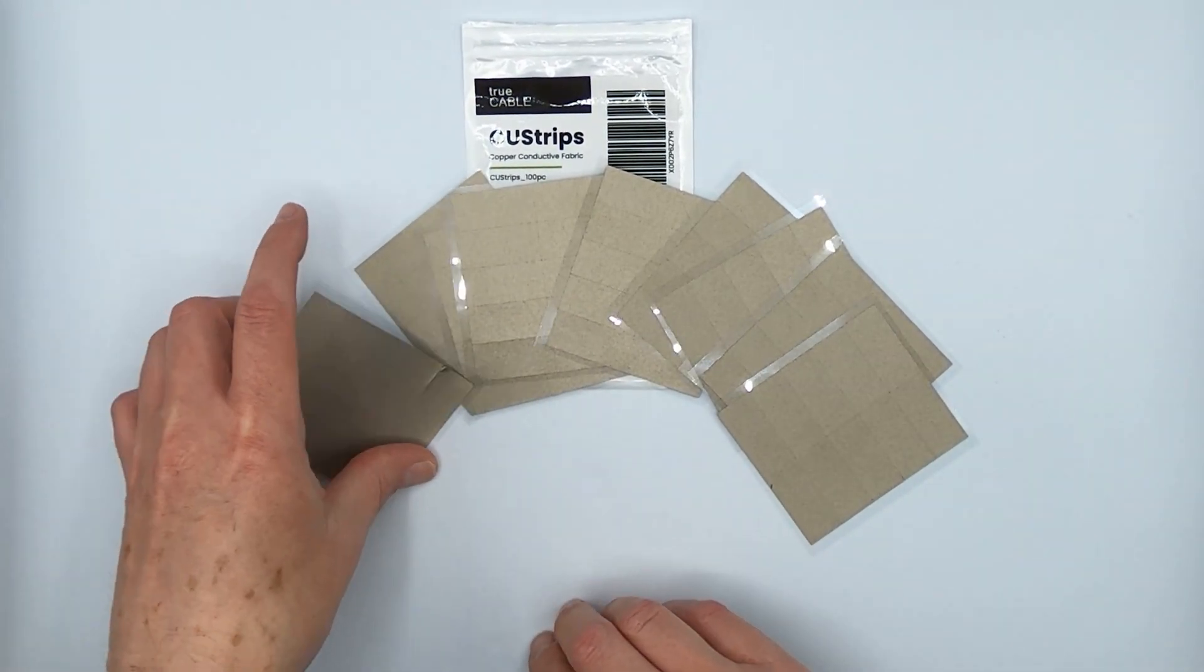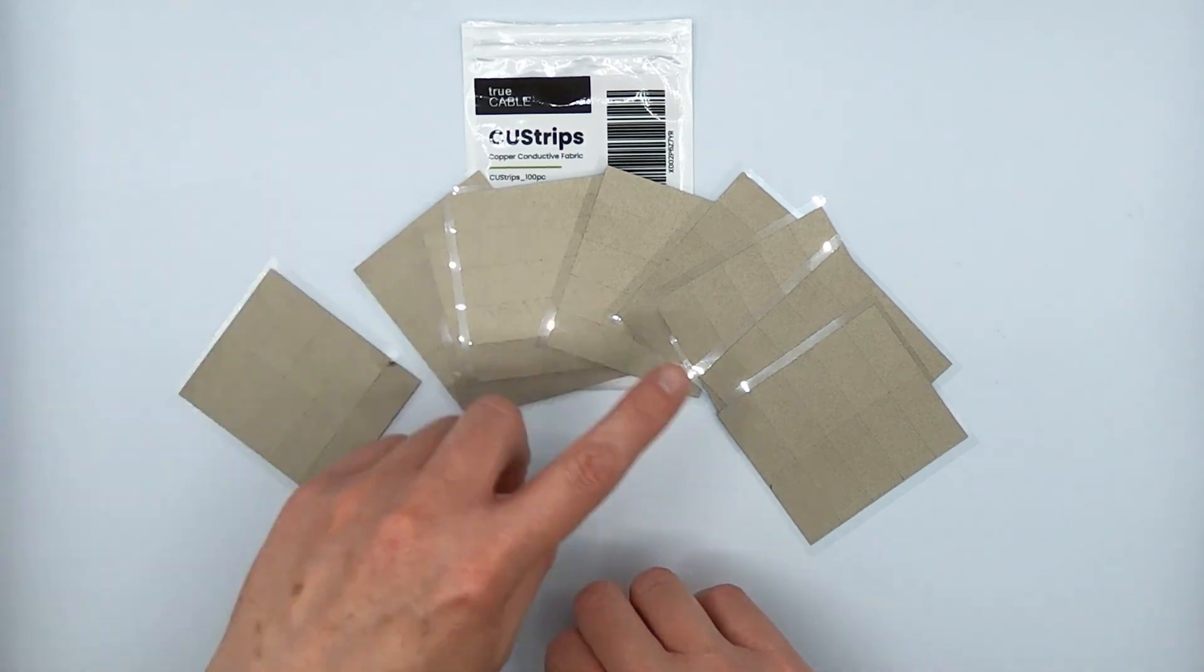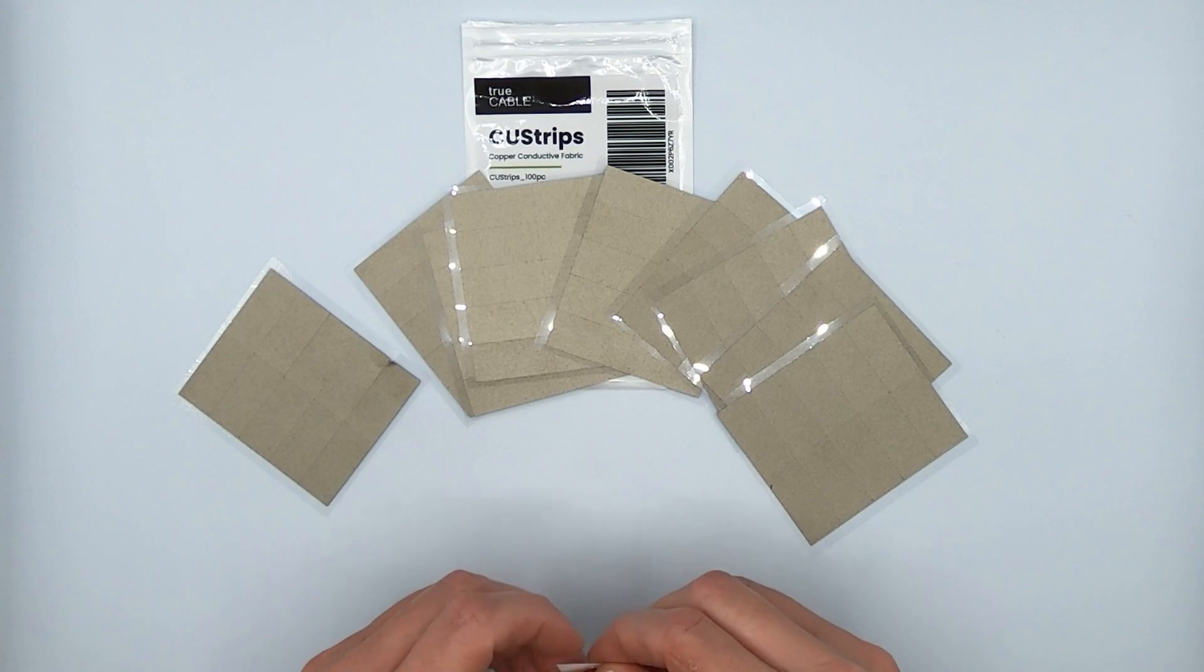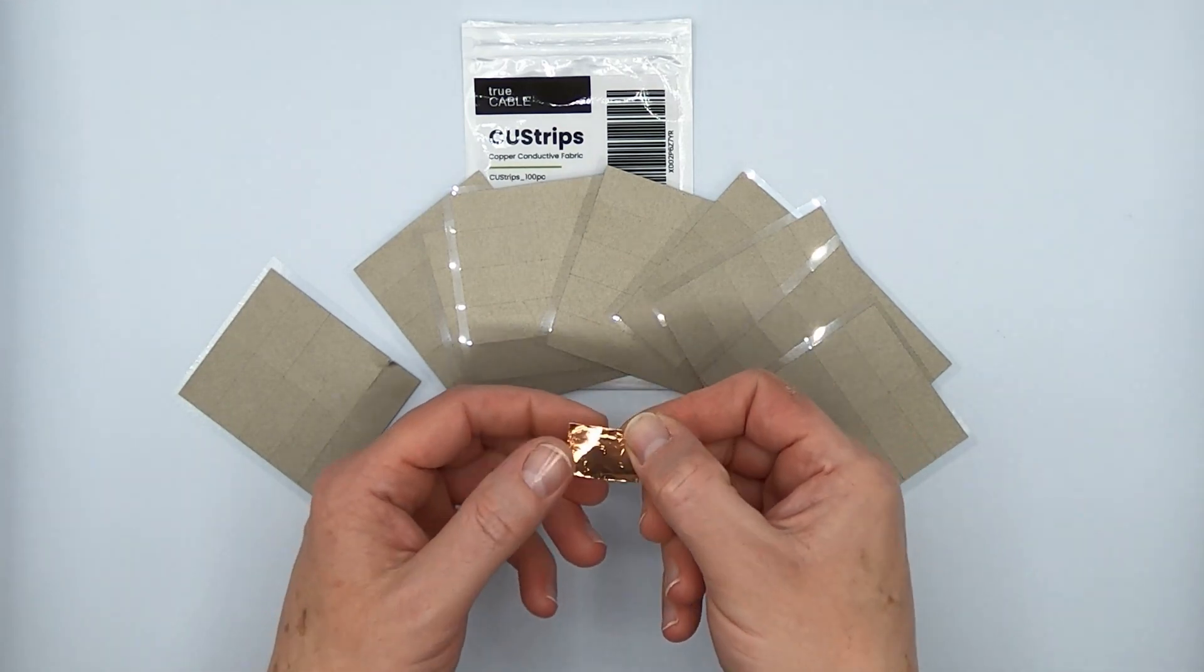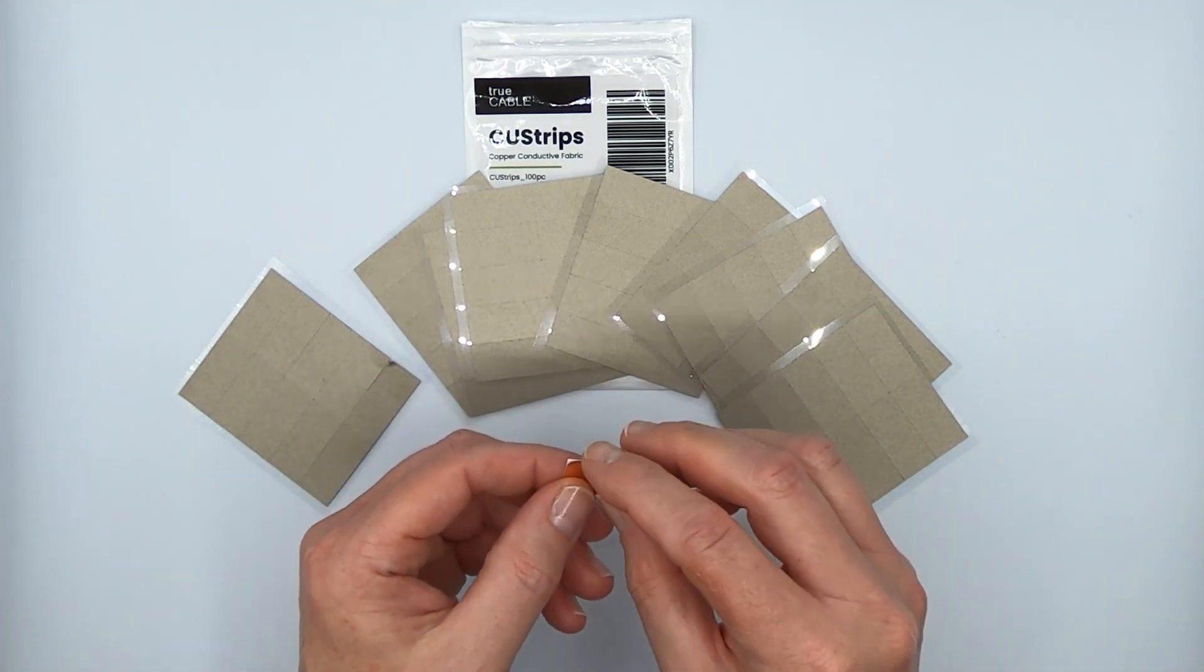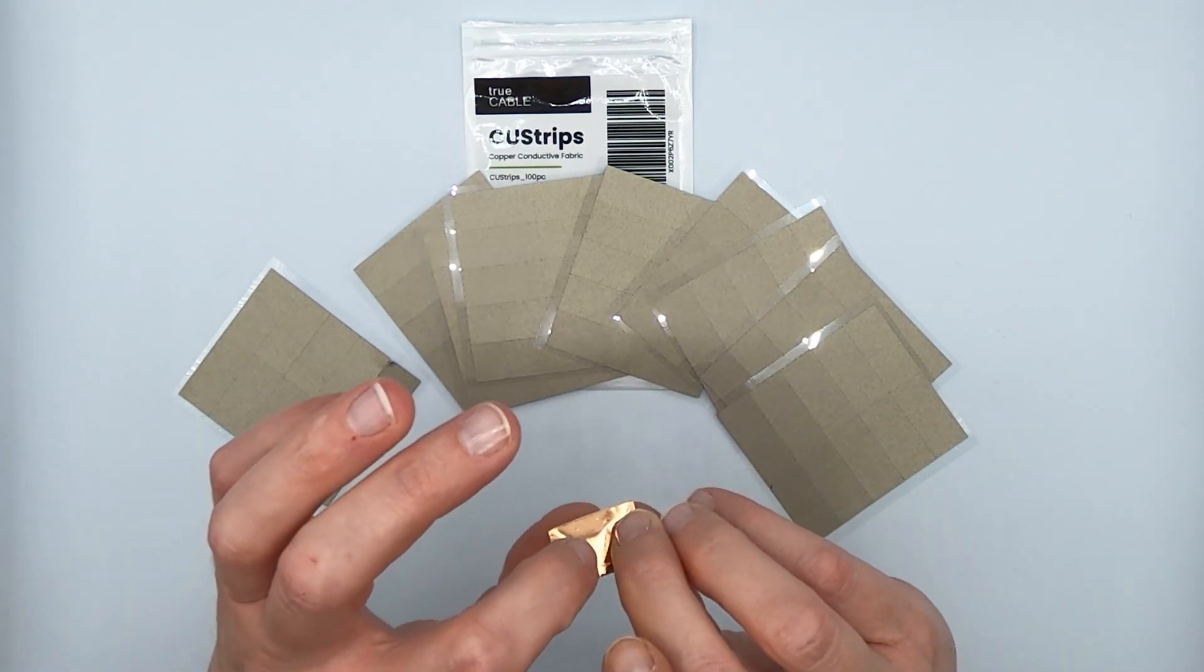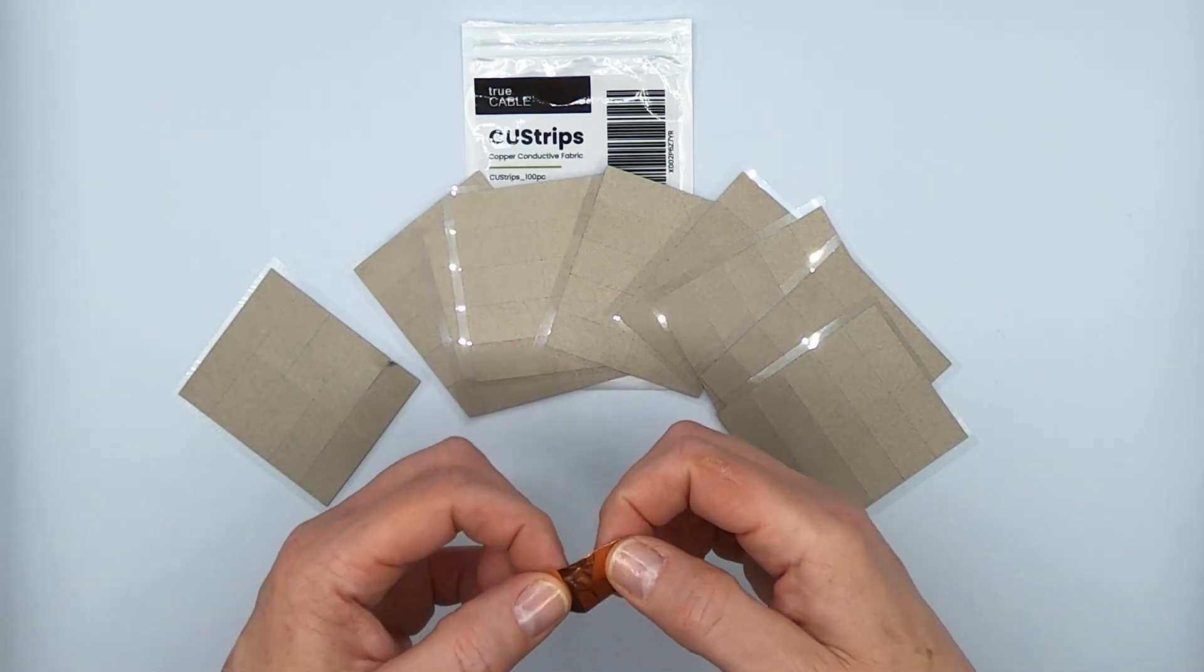Now what separates our copper fabric strips, which come in packs of hundreds, 10 per sheet, from the traditional copper tape if you've been using it in the past, is you would normally remove the copper tape and it has a conductive adhesive and then you wrap it around.